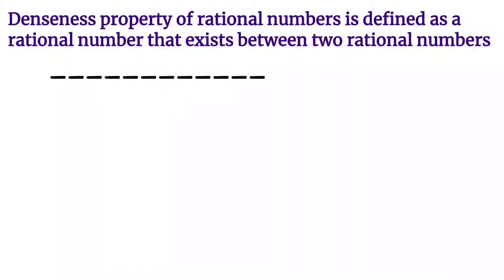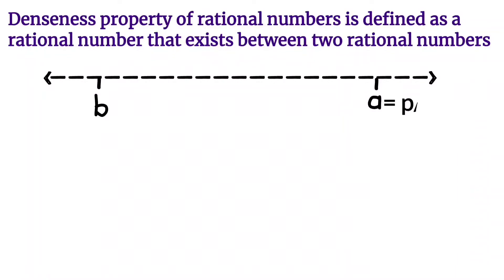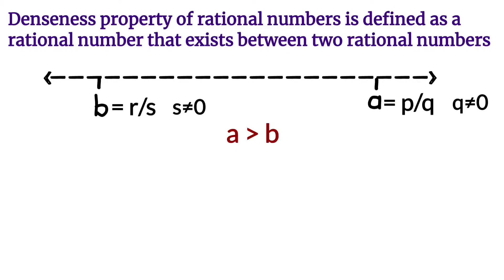Let us see one example for clear understanding. Let one rational number be b and another rational number be a. Let a equals p by q, where q is not equal to zero, and b equals r by s, where s is not equal to zero. Let us assume a is greater than b.